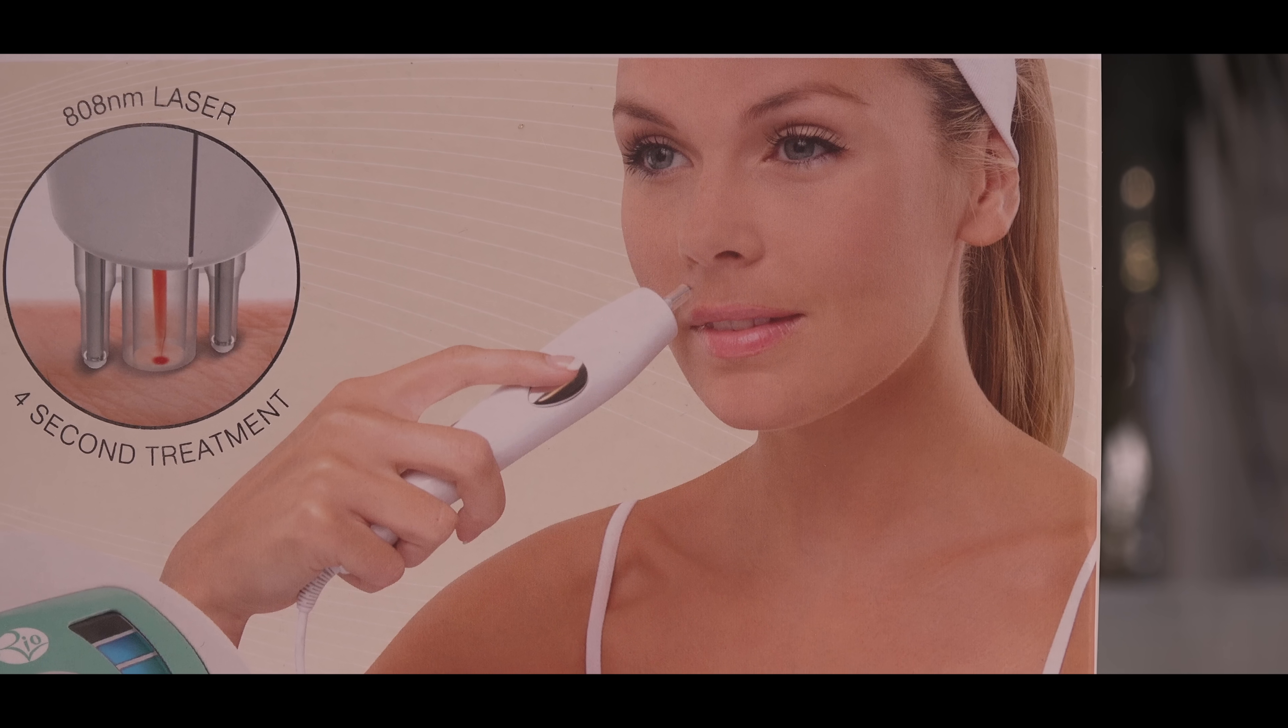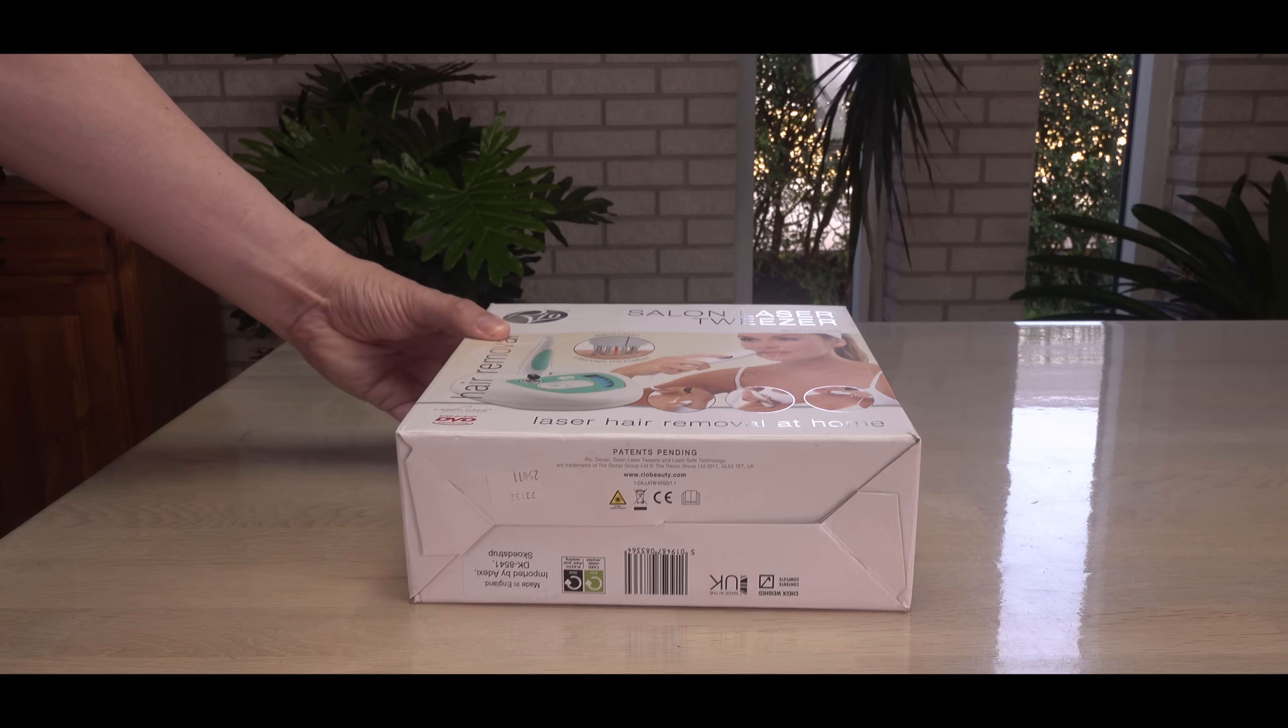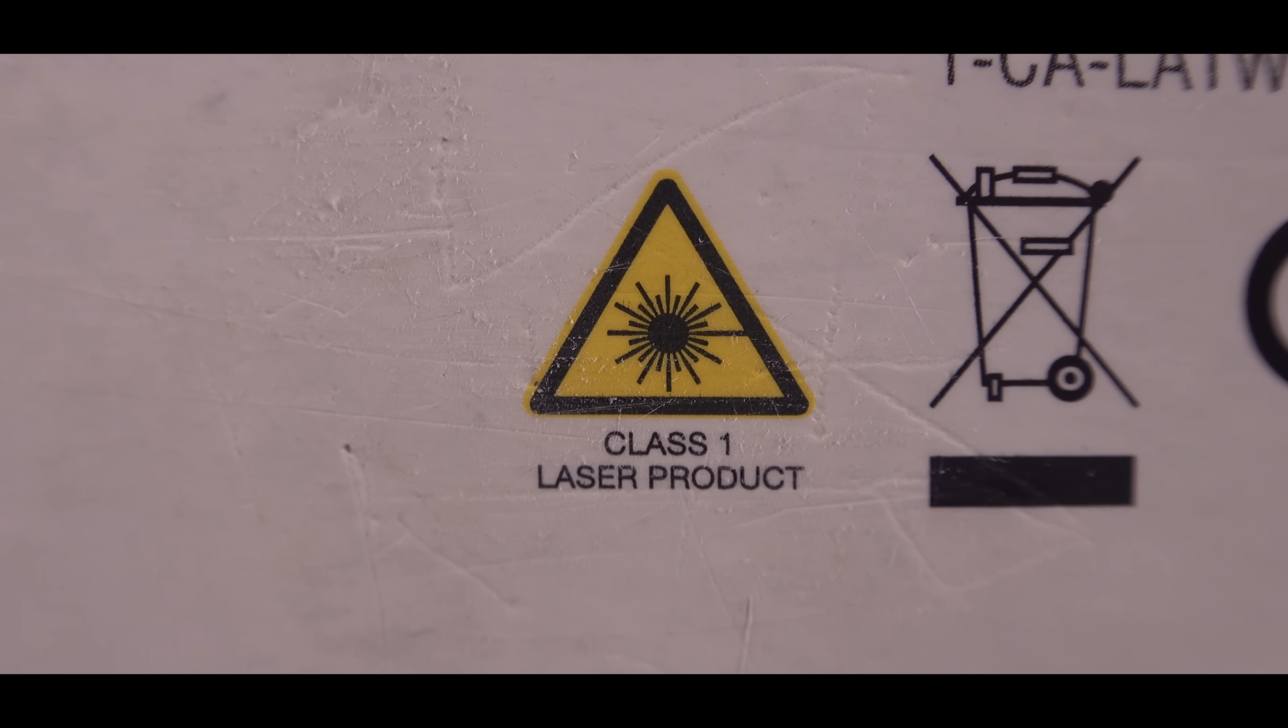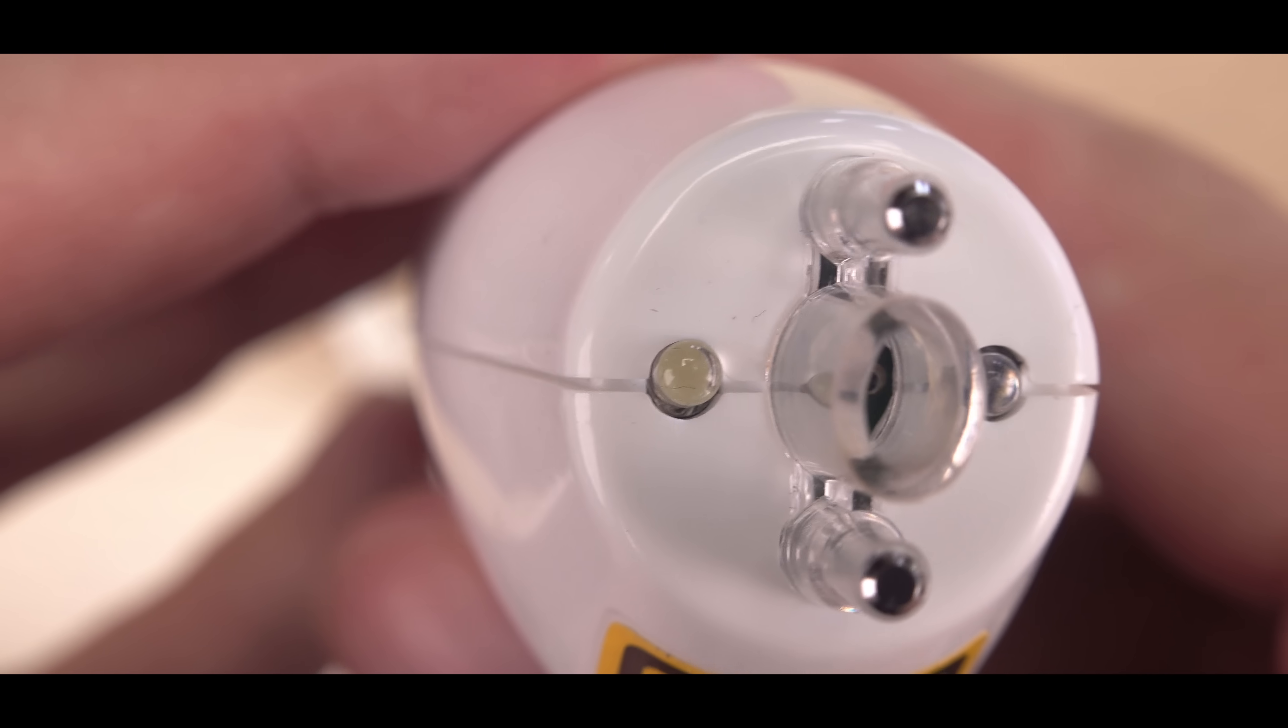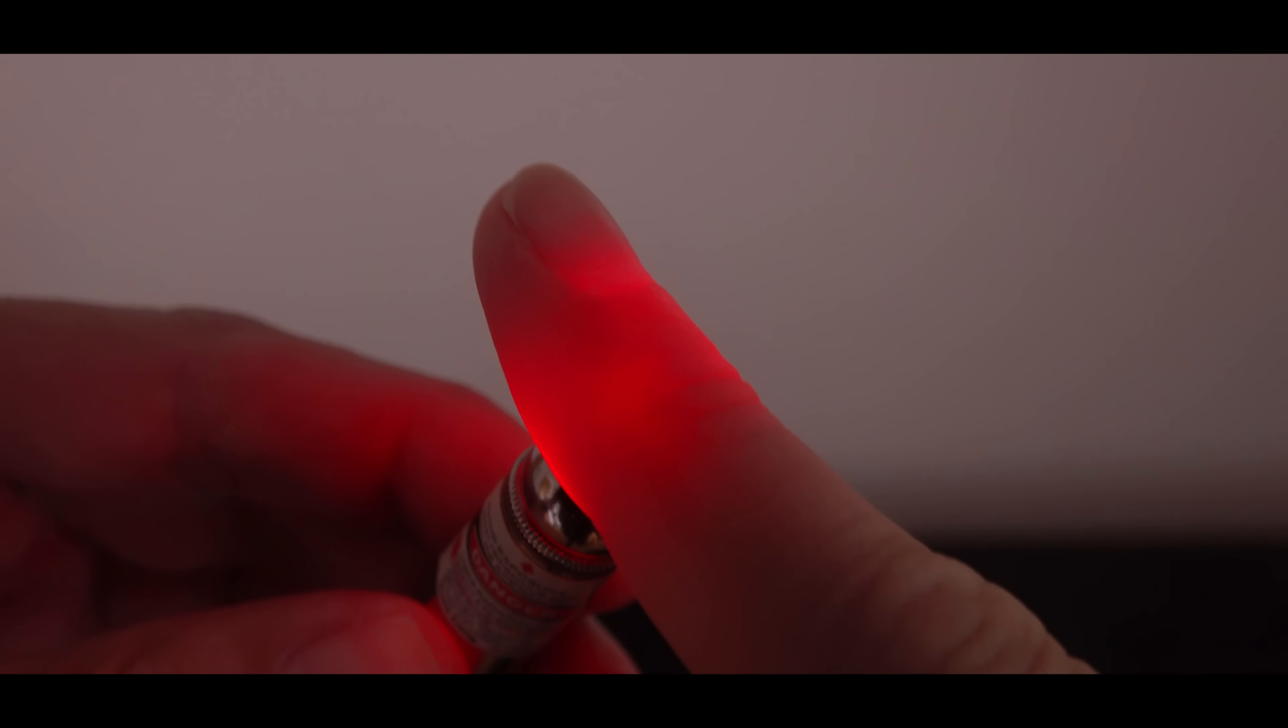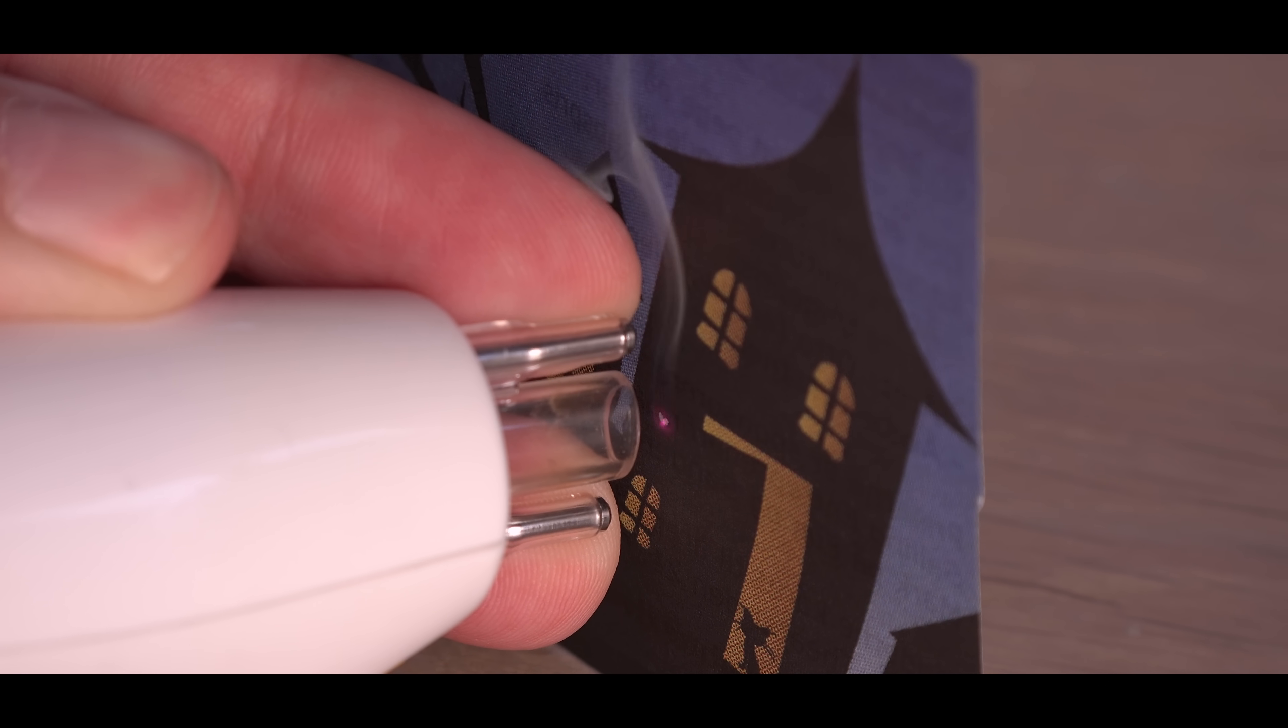On the box, the only sign of the laser's power is a tiny warning, almost hidden on the bottom. It says class 1 laser. Really? Class 1 is the safest, completely harmless class. How can it remove hair then? This seems a bit strange to me.